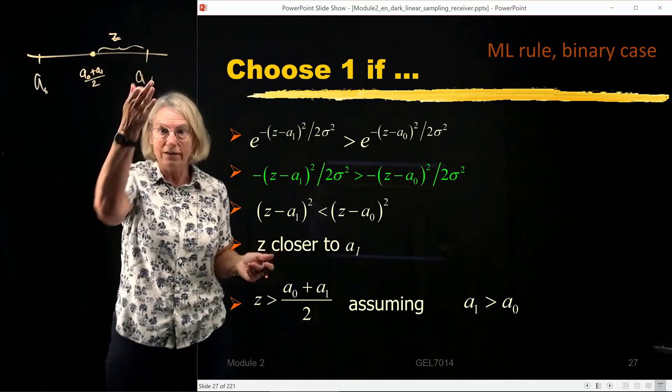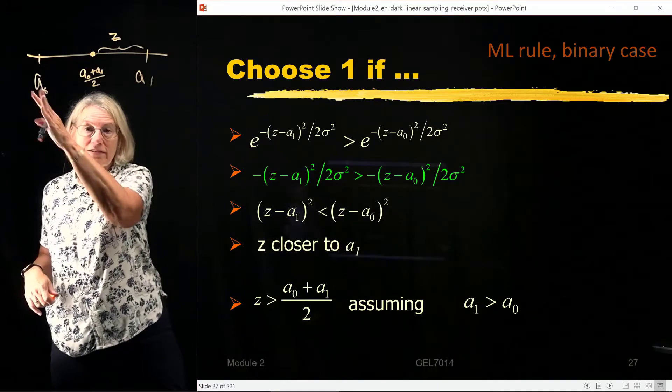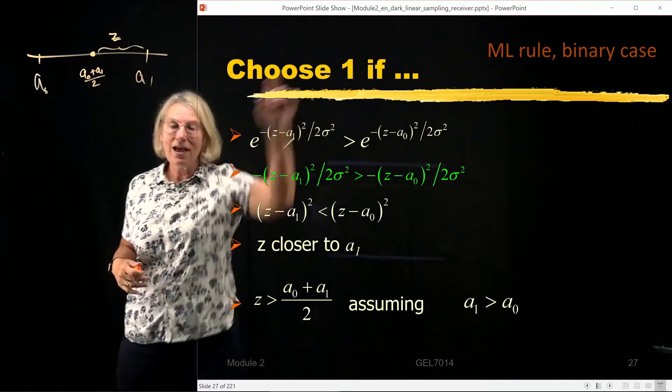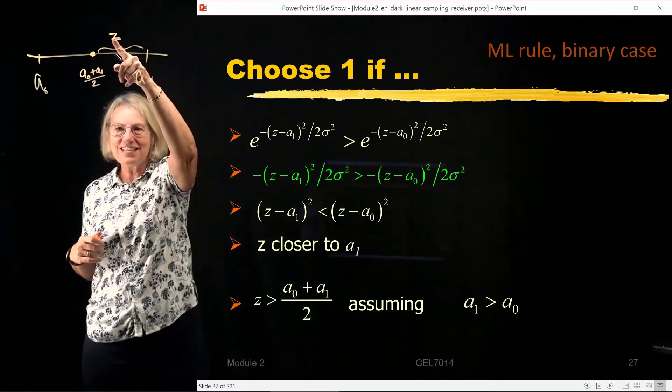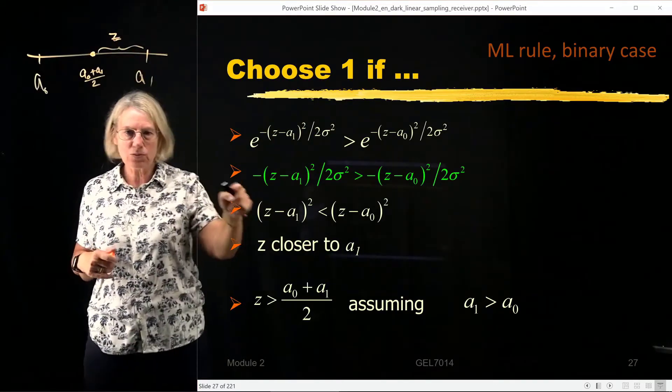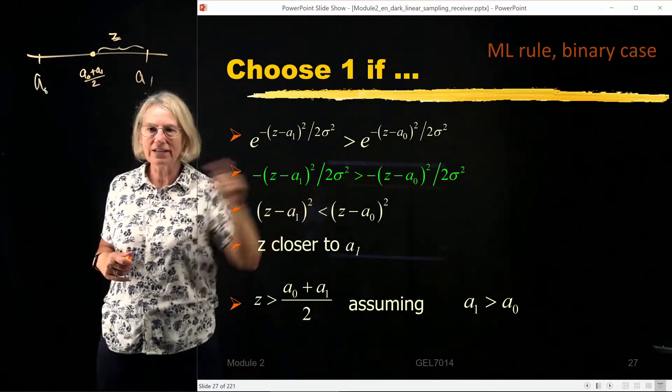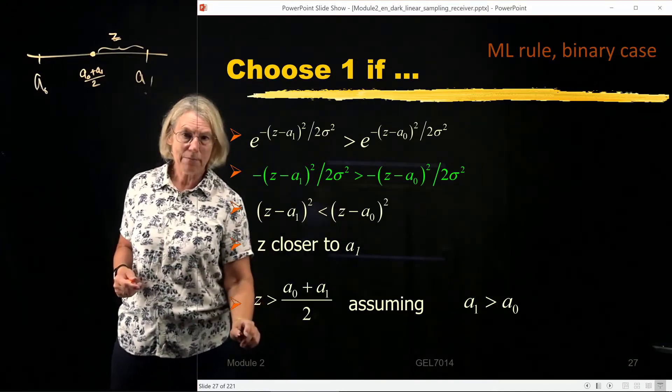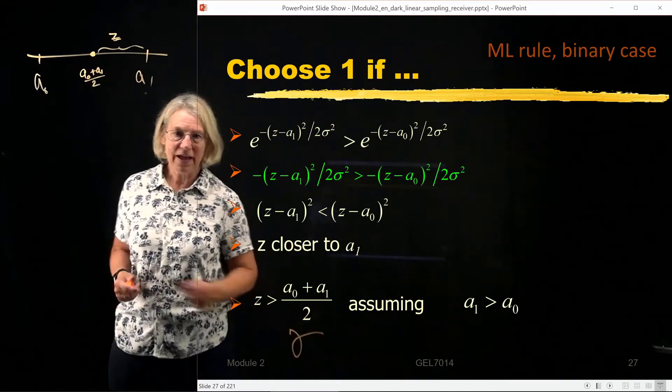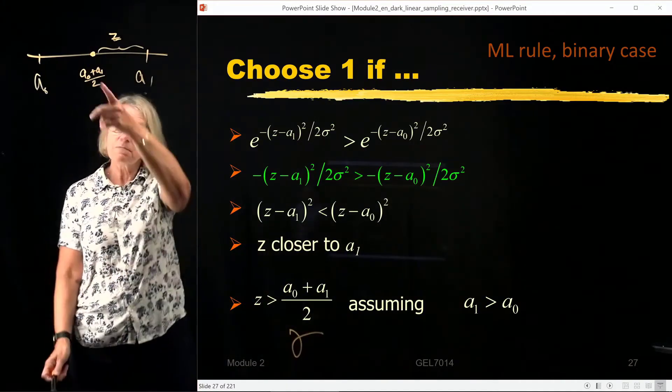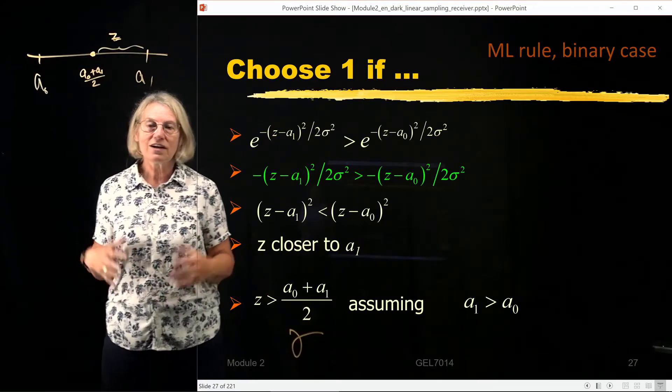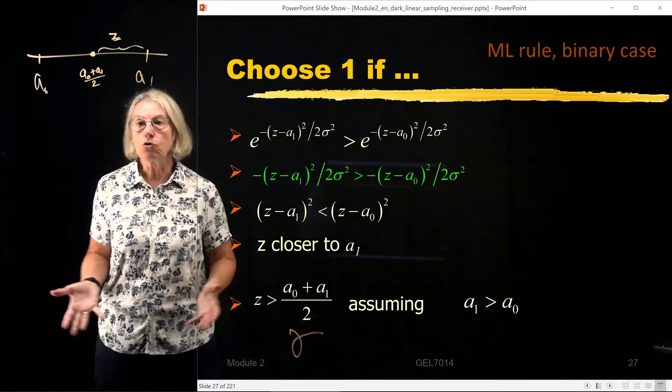So if the z that I observe is actually greater than the midpoint, well that means it's closer to a₁. If it's less than the midpoint, well then it's closer to a₀. So when do I choose 1? I choose 1 when the z is closer to a₁. That's what's going to make this quantity, this inequality true. So now I know what my gamma should be. This is my comparison. It's the midpoint. It's the midpoint between the two nominal values when there's no noise.